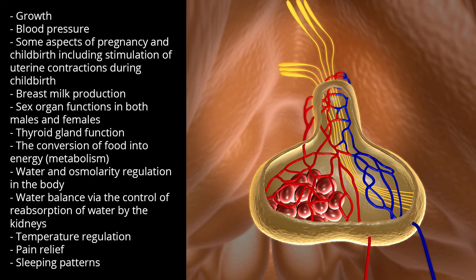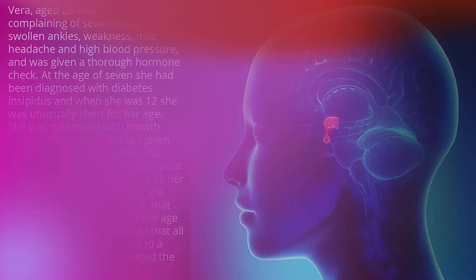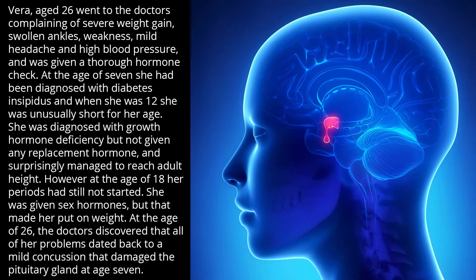Case study: Vera, aged 26, went to the doctors complaining of severe weight gain, swollen ankles, weakness, mild headache, and high blood pressure, and was given a thorough hormone check. At the age of 7 she had been diagnosed with diabetes insipidus, and when she was 12 she was unusually short for her age. She was diagnosed with growth hormone deficiency but not given any replacement hormone, and surprisingly managed to reach adult height.